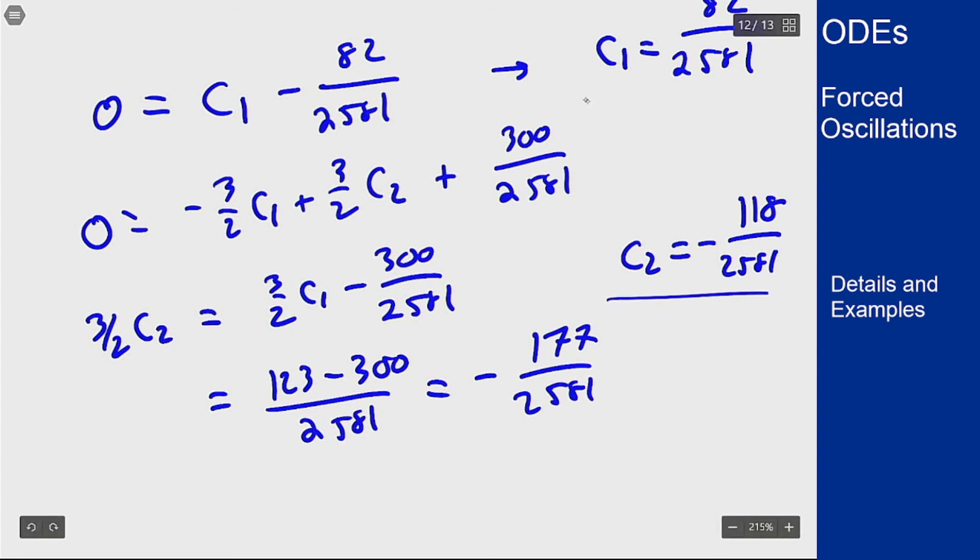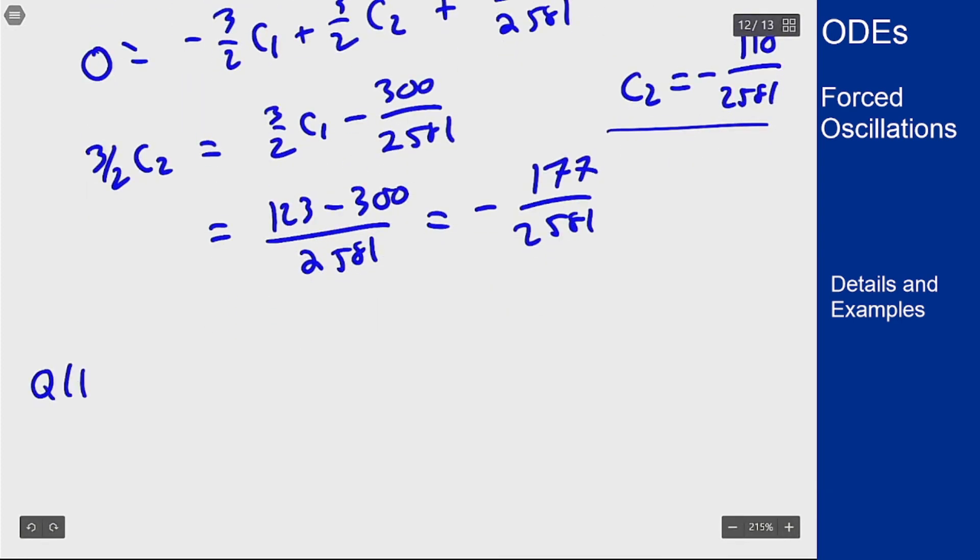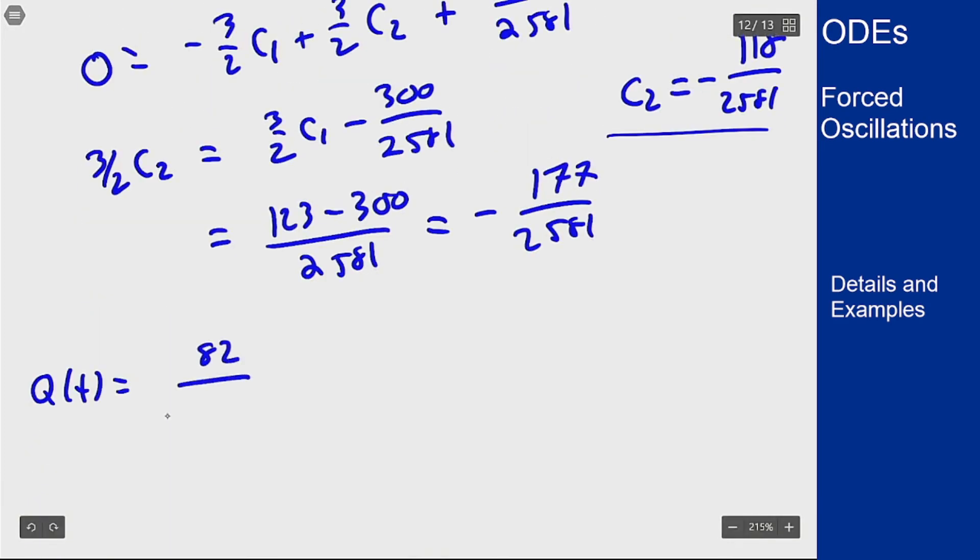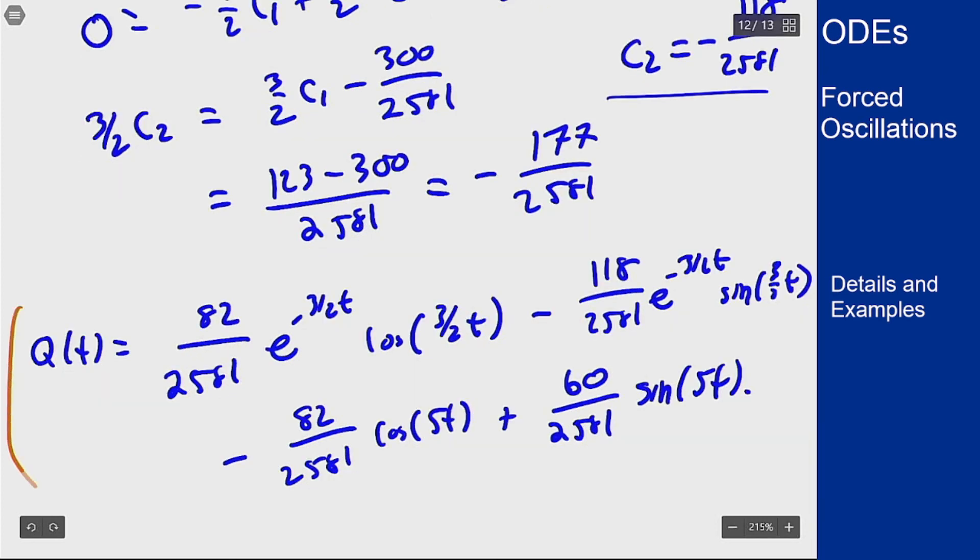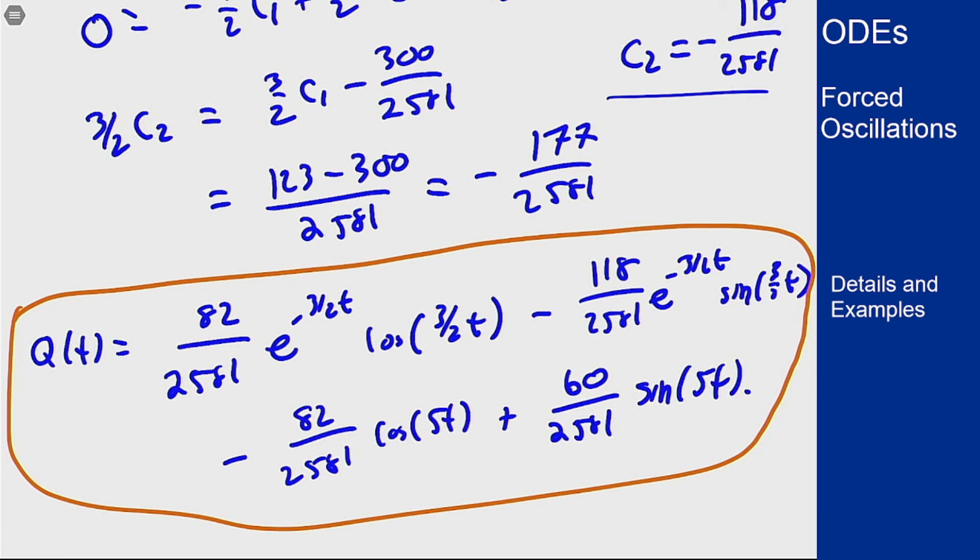Thus our full solution to the initial value problem, and therefore our function q for the charge at any time, is q(t) equals 82 over 2581 e to the minus 3/2 t cosine of 3/2 t minus 118 over 2581 e to the minus 3/2 t sine of 3/2 t, plus my non-homogeneous solution. That gives me the function that describes the charge at any time t coming from solving this non-homogeneous second-order constant coefficient equation that describes how this RLC circuit behaves. It involves many of our same techniques from non-homogeneous equations, as well as interpreting this correctly in terms of these actual circuits.